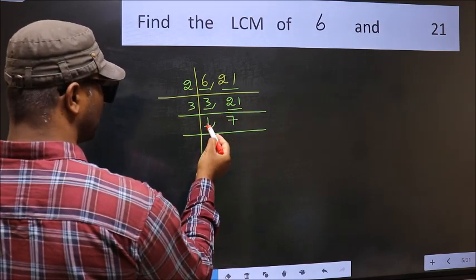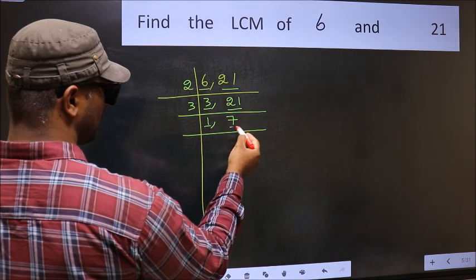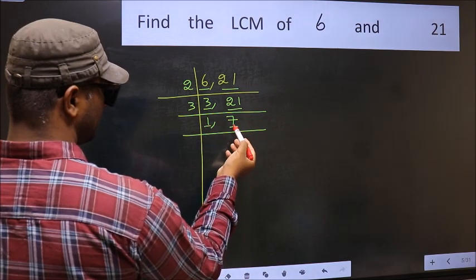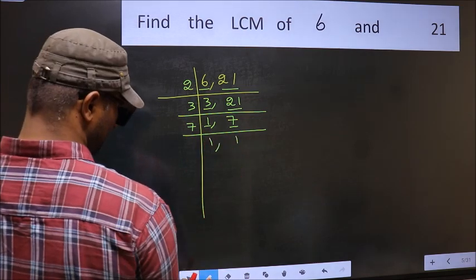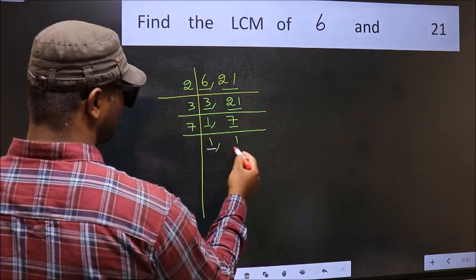Now we got 1 here, so focus on the next number 7. 7 is a prime number, so 7 divided by 7 is 1. So we got 1 in both places.